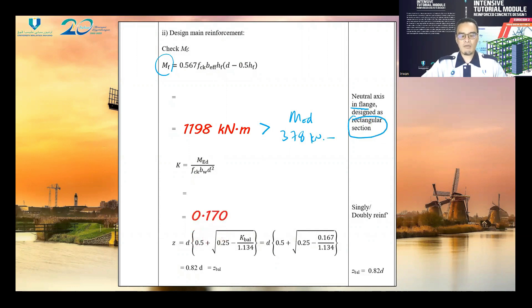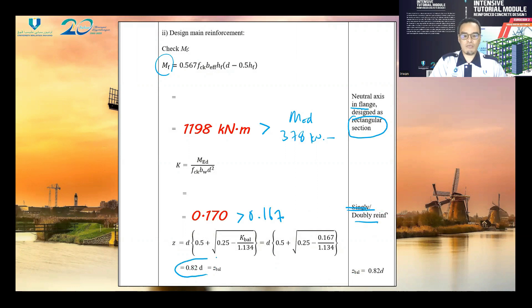The K value is 0.170, which is greater than 0.167, so we design as doubly reinforced. Therefore the value of lever arm Z is equal to 0.82d, known as Z balanced.